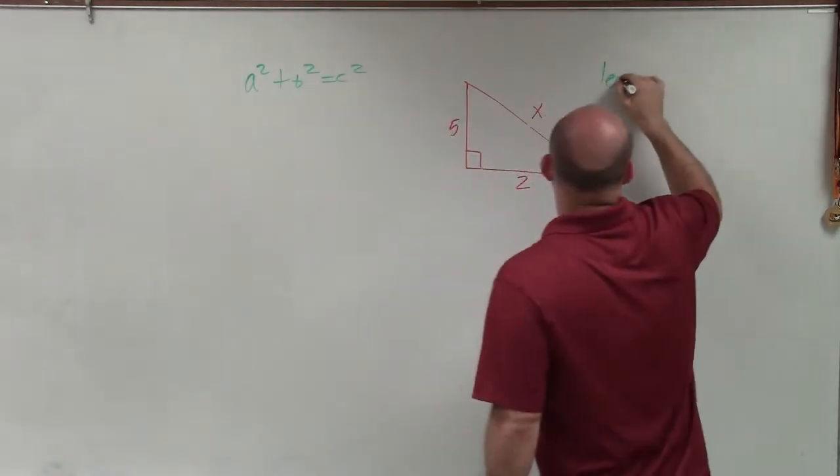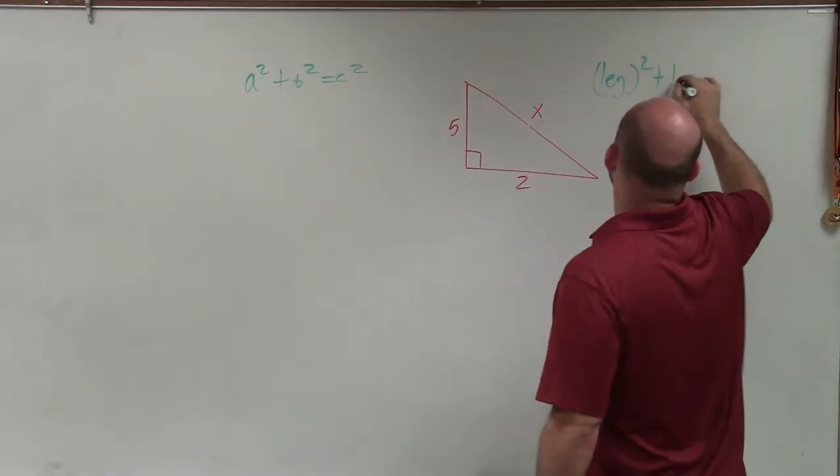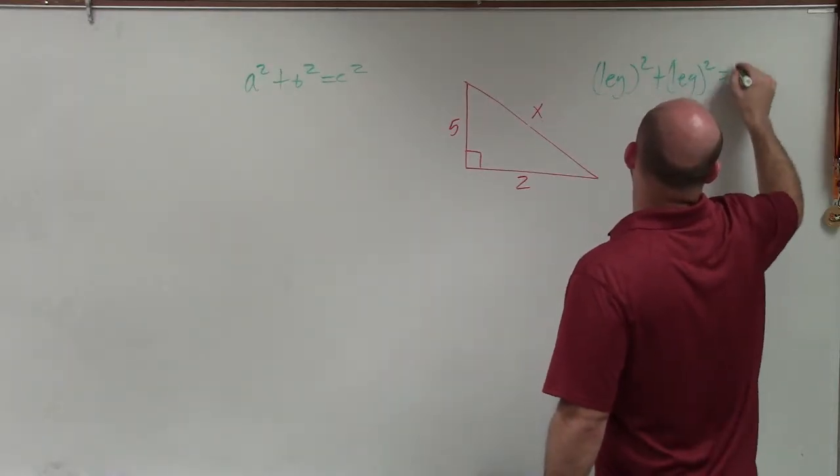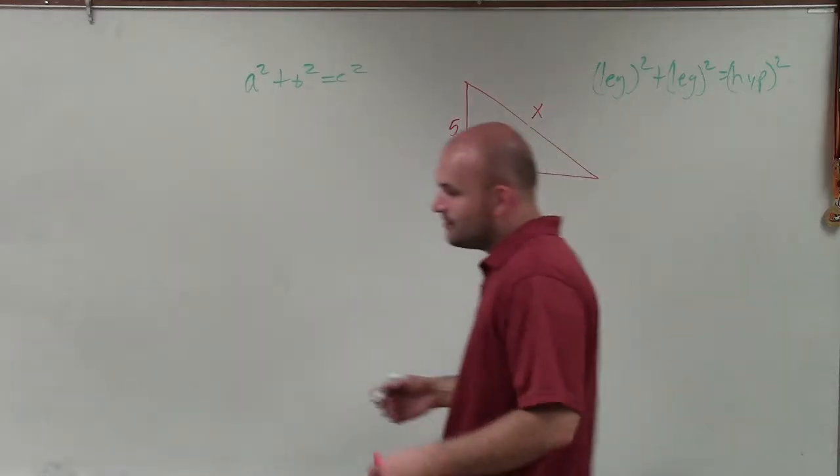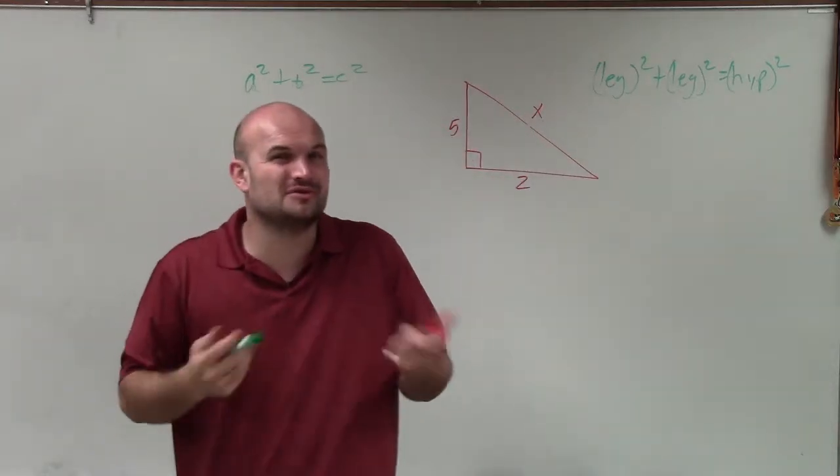I always like to say leg squared plus leg squared equals the hypotenuse squared. The reason I write it that way is because our variables are not always a, b, and c.